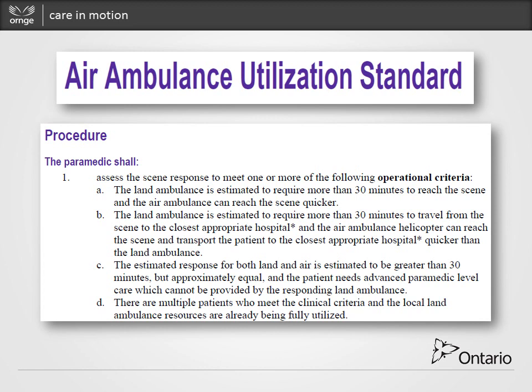What is lost when we make these standards is that they're provincial. A good example that comes to mind is Kenora, where it is a 90-minute response time for EMS to multiple locations, and then a 90-minute transport back. For a sick patient, you can easily get a helicopter there and get them off that island or remote location and back to Kenora Hospital well before land EMS can get there. So in writing the standards, you're trying to figure out who are those time-sensitive sick patients that will benefit from the speed of the air ambulance.